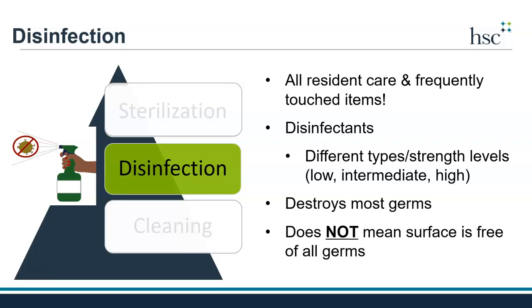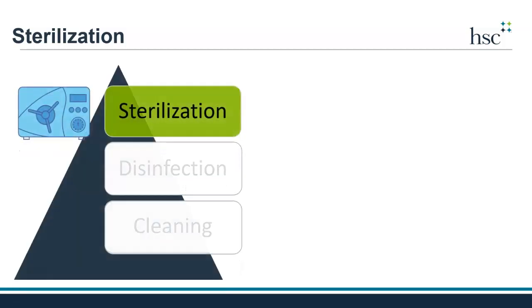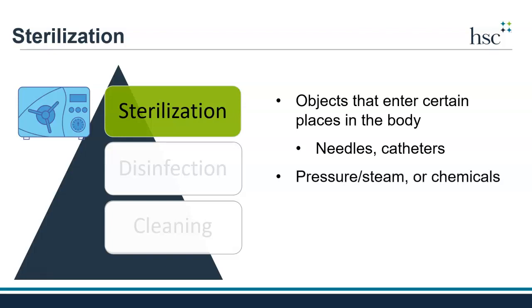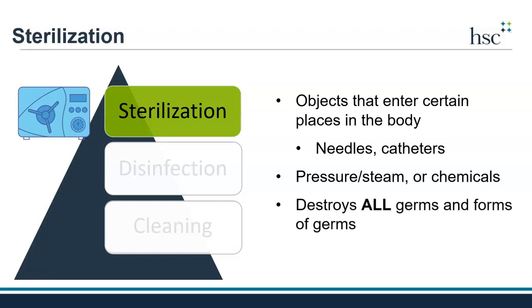The last and highest level of germ removal is sterilization. Sterilization must be done on any objects that may come into contact with areas of your body which are germ-free, such as your bladder and your circulatory system that carries your blood. Items that must be sterilized before use include needles and catheters. While sterilization can be done using special chemicals, it's typically done by using a special machine that uses a combination of pressure and steam to heat items thoroughly, destroying all germs, including hardy germs and forms of germs that make them especially hardy.